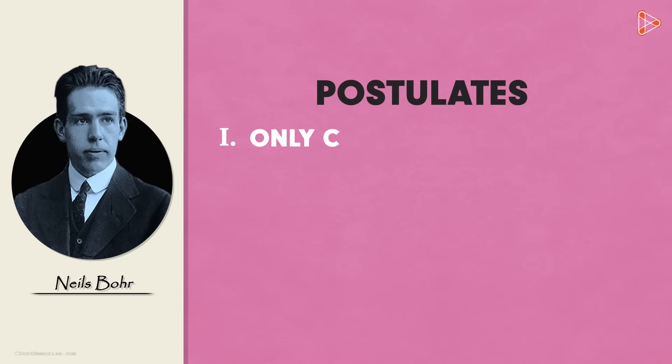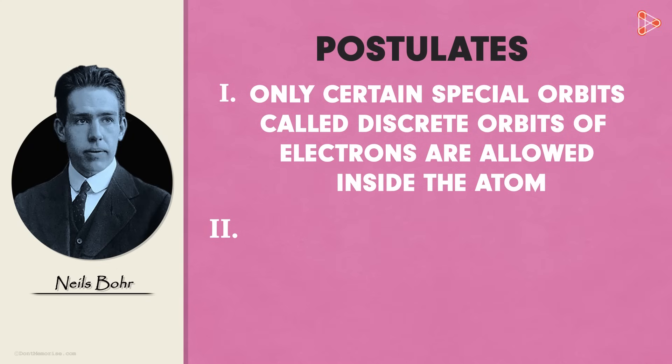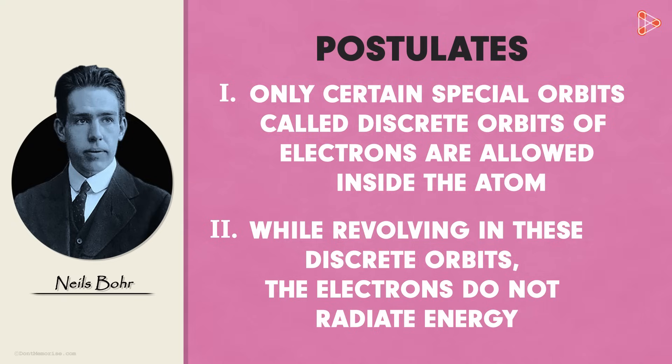The postulates put forward by Niels Bohr were as follows. Firstly, only certain special orbits called discrete orbits of electrons are allowed inside the atom. Secondly, while revolving in these discrete orbits, the electrons do not radiate energy. Now these points definitely tell us why an atom is so stable.